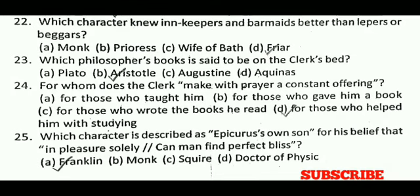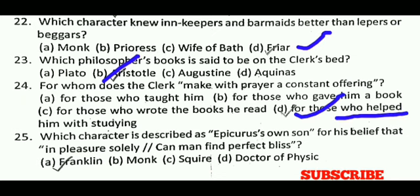Next question: Which character knew innkeepers and barmaids better than lepers or beggars? The correct answer is D, that is the Friar. Next question: Which philosopher's books are said to be on the Clerk's bed? The correct answer is B, that is Aristotle. Next question: For whom does the Clerk make with prayer a constant offering? The correct answer is D, for those who helped him with his studies. Next question: Which character is described as 'Epicurus' own son' for his belief that in pleasure solely can man find perfect bliss? The correct answer is A, that is the Franklin.